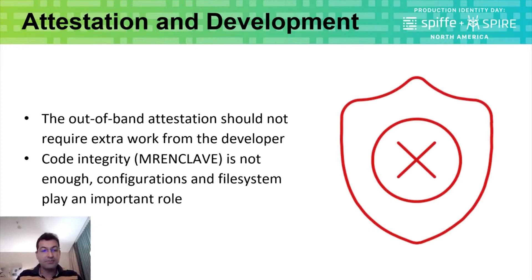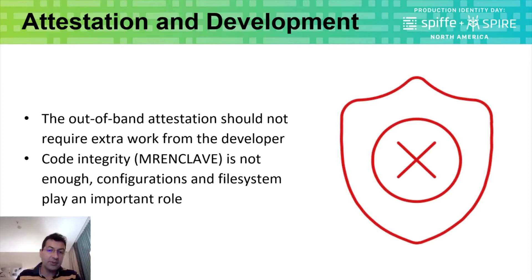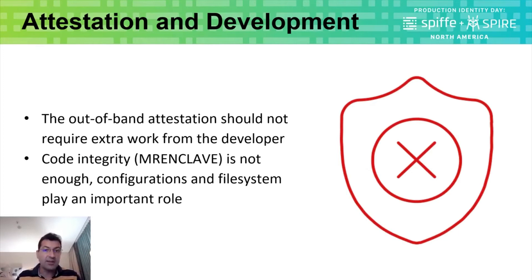The attestation in the SPIRE model is done with out-of-band communication, which as mentioned could be deviated. It's also important that this out-of-band communication doesn't impose extra work on the developer — if the application needs to be modified to run with both confidential computing and SPIRE at the same time, that poses yet another obstacle to adoption. Finally, code integrity given by the MR enclave is not enough, because configurations, libraries, and other things on the file system can affect how the application runs.